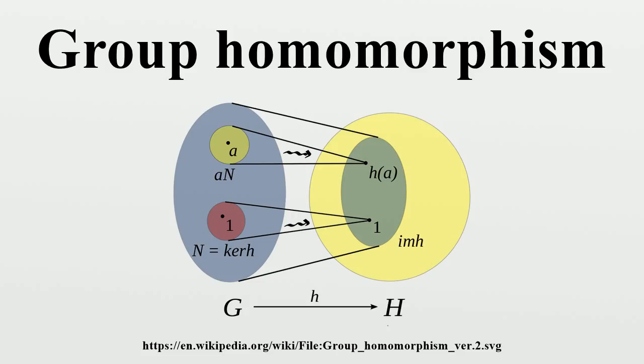In areas of mathematics where one considers groups endowed with additional structure, a homomorphism sometimes means a map which respects not only the group structure but also the extra structure. For example, a homomorphism of topological groups is often required to be continuous.